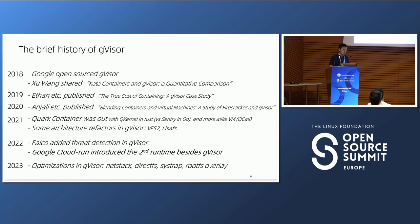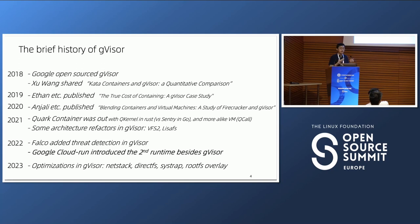After that, a startup company open sourced Quark container, which is very similar to gVisor but rewrites the guest kernel using Rust, trying to substitute the Go language. We treat it more like a virtual machine because they have a clear barrier between the guest kernel and the hypervisor. They even have a mechanism named Q-Core to accelerate this communication.